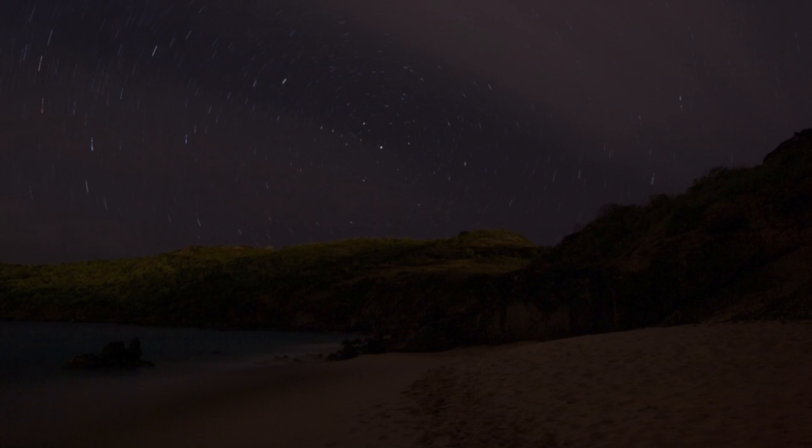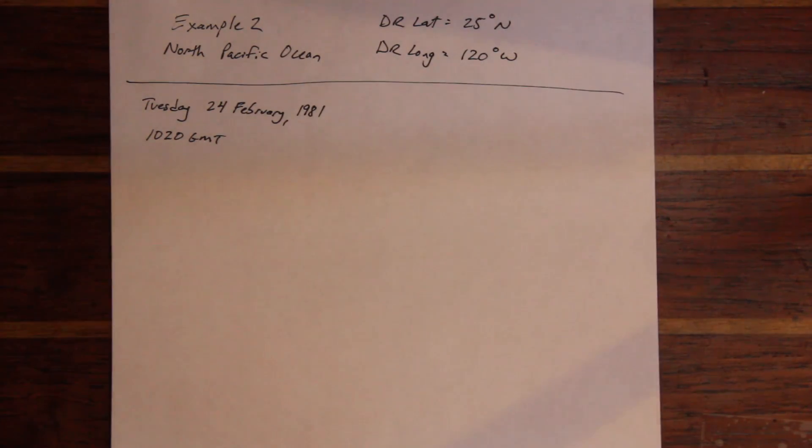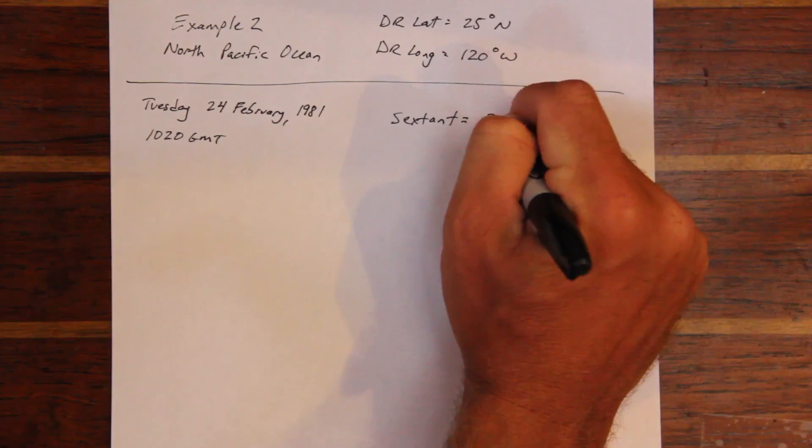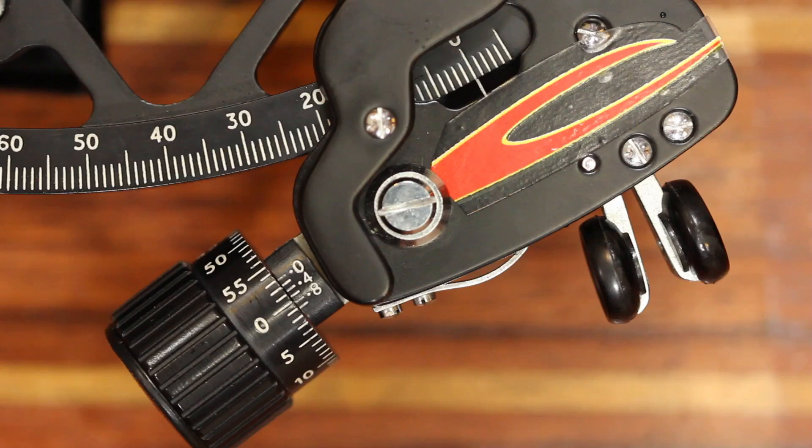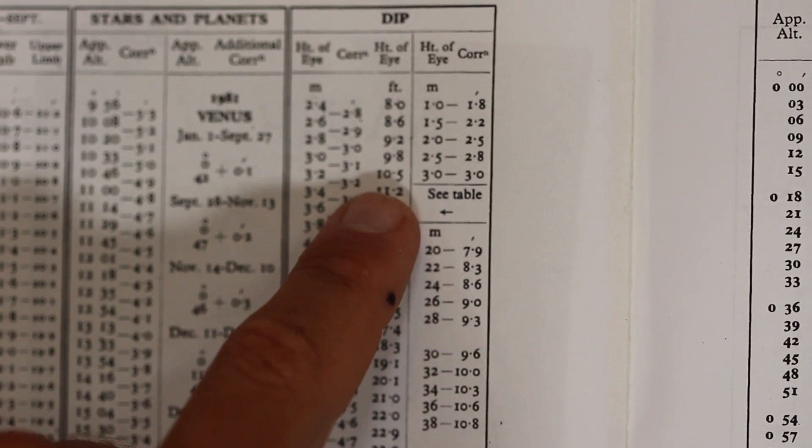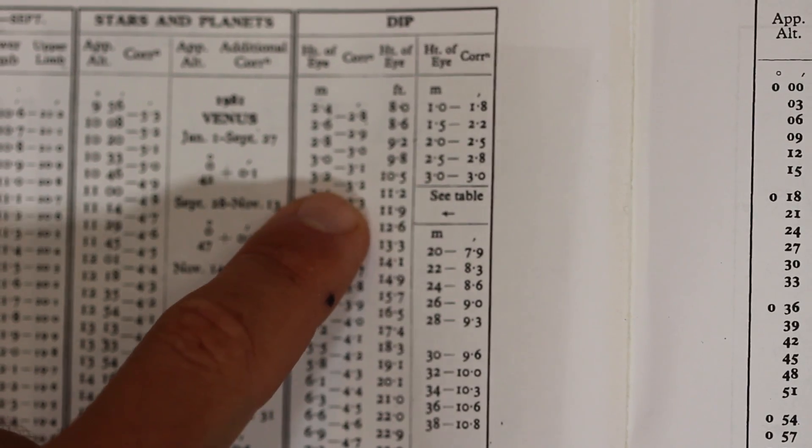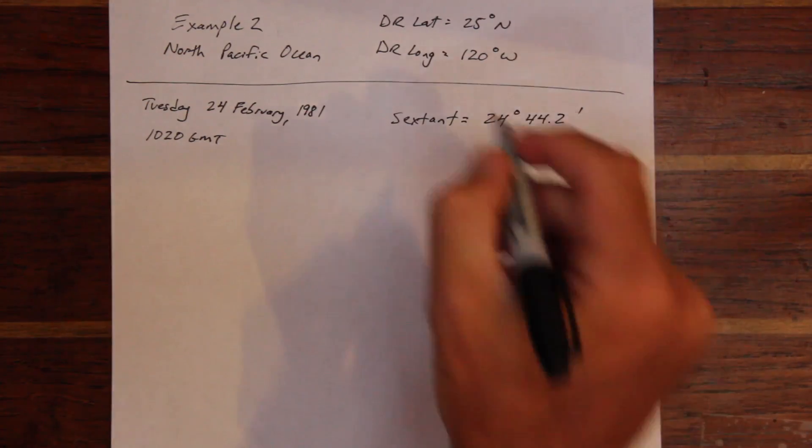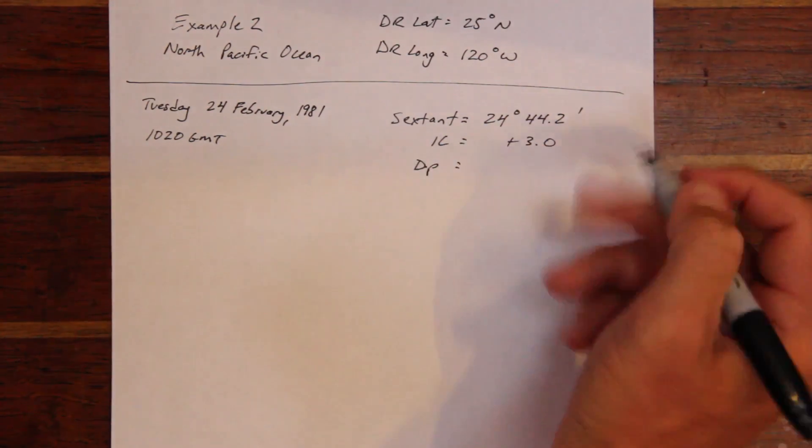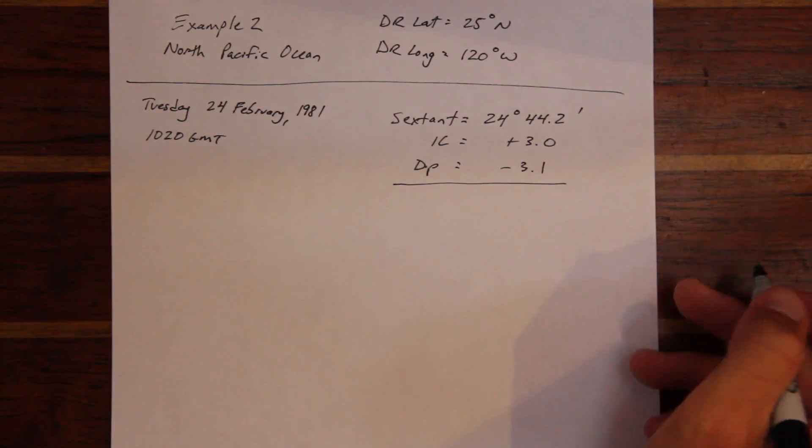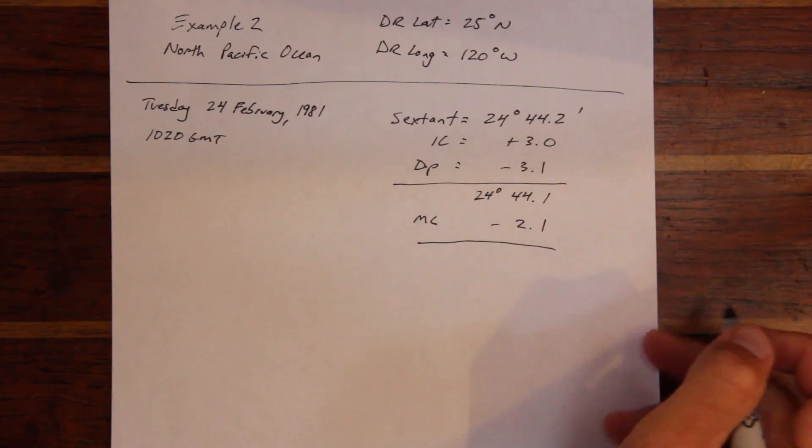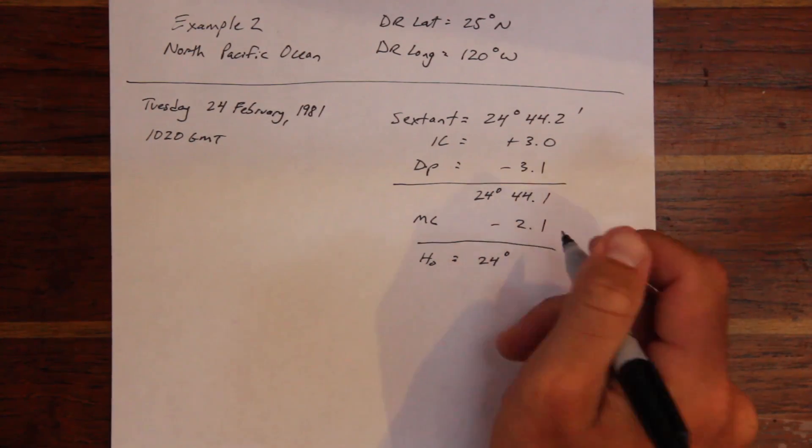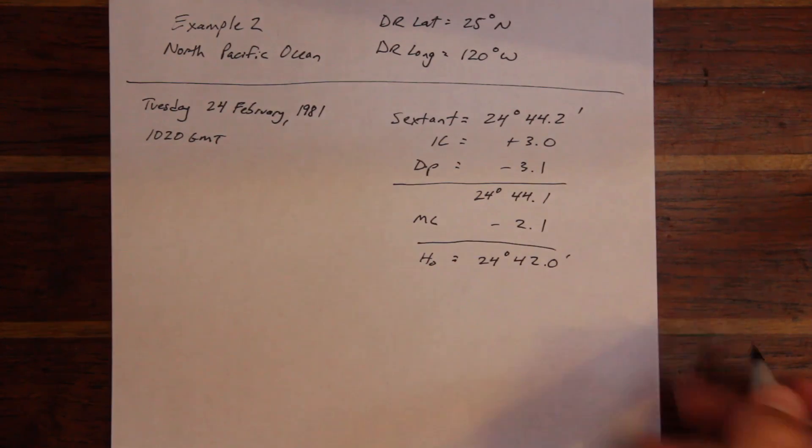Let's take a look at a second example problem. In this case, the sextant altitude is 24 degrees and 44.2 minutes. We apply our index correction, which is off the arc in this case, and the dip correction to come up with our apparent altitude. Again, we'll apply our apparent altitude correction to the stars and planets table and not the sun table. After all corrections, the observed altitude is 24 degrees and 42.0 minutes.